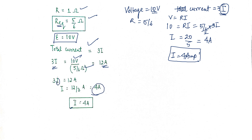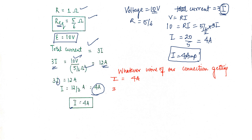So the current in each segment of the network is as follows: wherever the current is i, it is 4 amperes; wherever the current is 3i, it is 12 amperes — this is the total current; and wherever the current is i/2, it is 4/2 = 2 amperes. In this way we know the current in each loop and each wire of the connection.